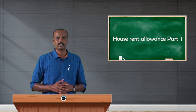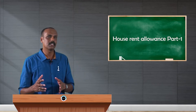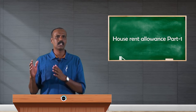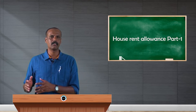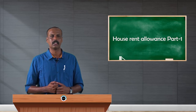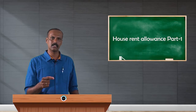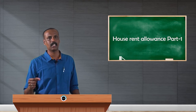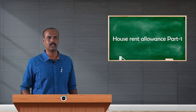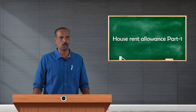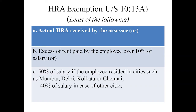Let us have a look at how much is exempted and how it is exempted. Out of the HRA received by the employee, the least of the following three amounts is exempted. We will calculate three amounts, and whichever is the least is exempted; the remaining amount is taxable. This exemption is under section 10 subsection 13A. The first one is the actual HRA — how much HRA is paid by the employer to the employee.